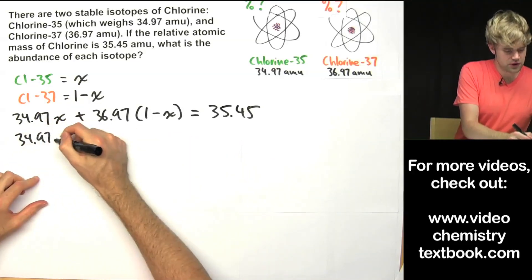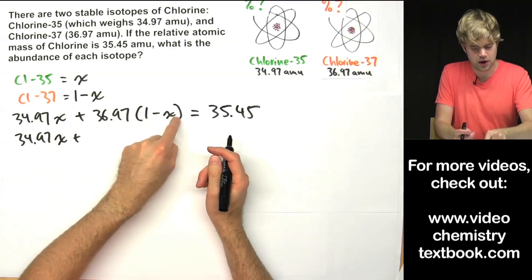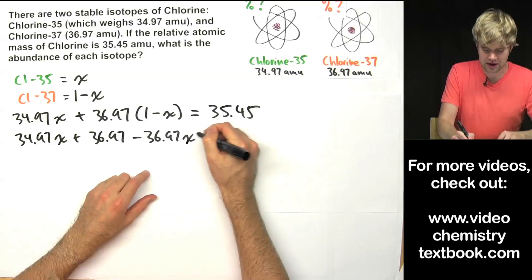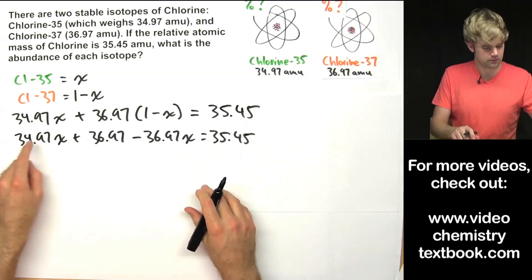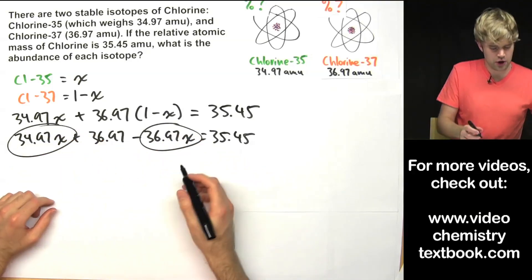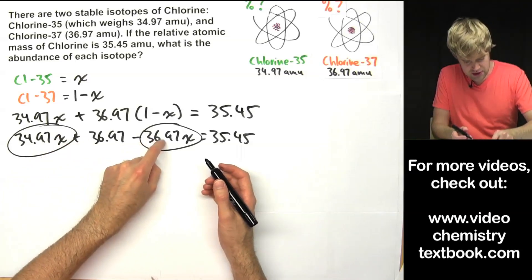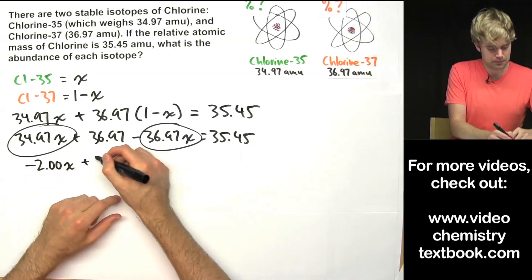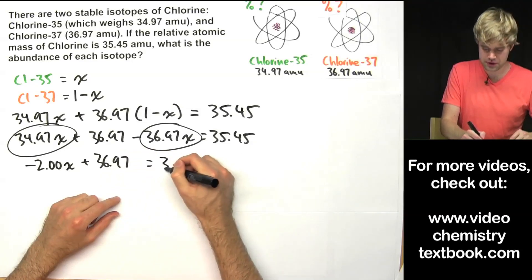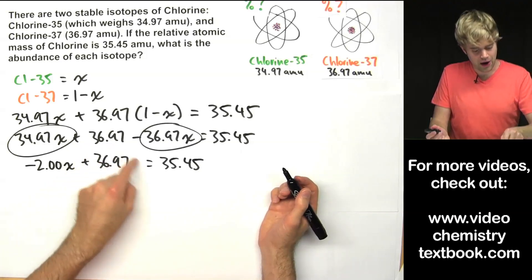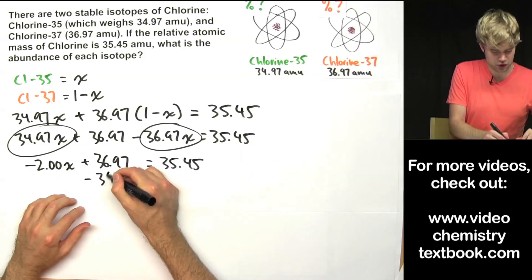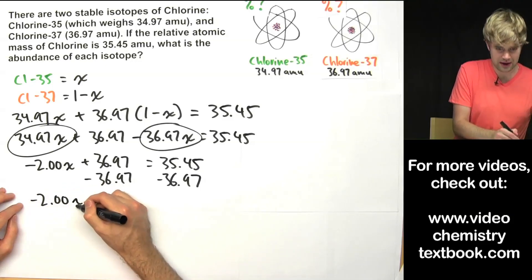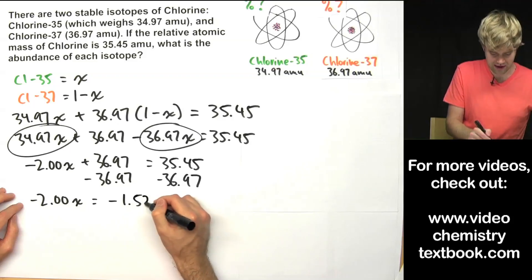I'm going to rewrite this and first distribute 36.97 through the parentheses, giving: 34.97x plus 36.97 minus 36.97x equals 35.45. Now I have two x terms — 34.97x minus 36.97x — which gives me negative 2.00x. So the equation becomes: negative 2.00x plus 36.97 equals 35.45.